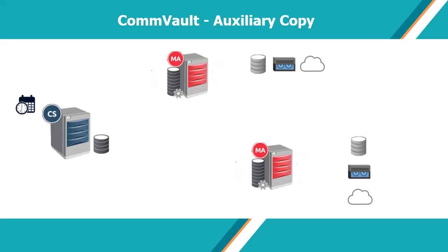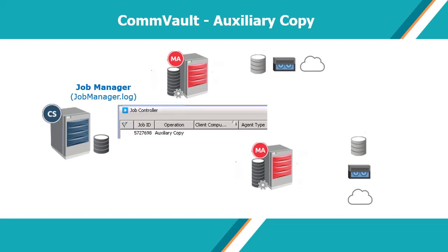At the scheduled time, the scheduler will trigger the auxiliary copy job for the corresponding storage policy. Job Manager records the new scheduled auxiliary copy request and assigns a job ID. Auxiliary Copy Manager then takes over, initializes job control, and Job Manager acknowledges.